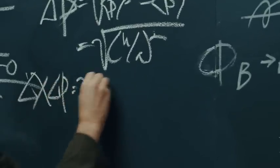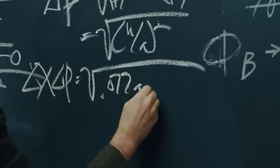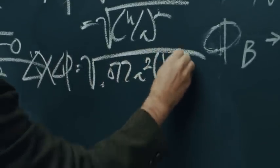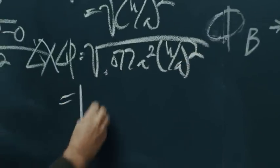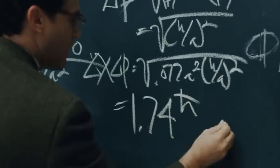delta p equals the square root of 0.077a squared, h over a squared, and 1.74h bar.